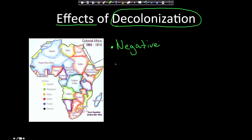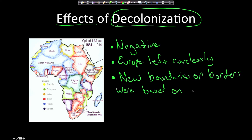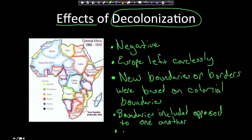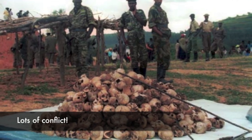Why wasn't it good? Basically because Europe left carelessly. The new national boundaries and borders were based on old colonial boundaries. The problem was that these boundaries often included two or more ethnic groups that were opposed to each other. And of course, this led to a great deal of conflict.